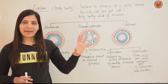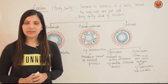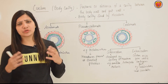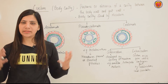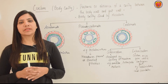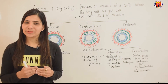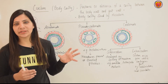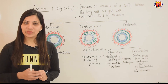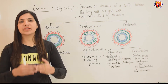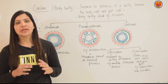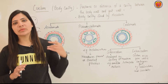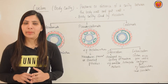Kuch part hamara ectoderm se banega. Aage padhenge ki nervous system hamara ectoderm se banta hai. Alag-alag parts hain. Jaise jaise chapter padhate jayenge, wahaan pe aap dekhte jayenge. Kuch part ectoderm se originated hoga, kuch mesoderm se, kuch endoderm se. Sabse pehle yaad rakhna hai — kuch bhi banne se pehle teen germ layers banenge.